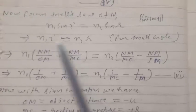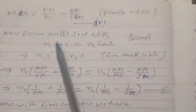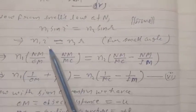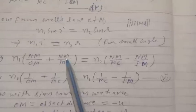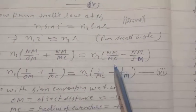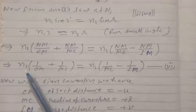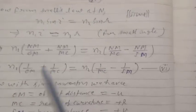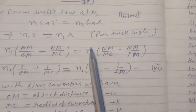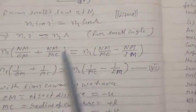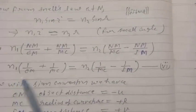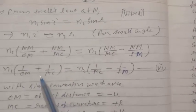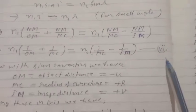Putting the values of i and r into the equation, n1 times (NM/OM + NM/MC) equals n2 times (NM/MC minus NM/MI). Taking NM out of brackets from both sides, it cancels, leaving n1·(1/OM + 1/MC) equals n2·(1/MC minus 1/MI). This is equation 6.